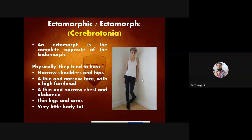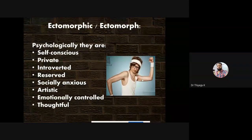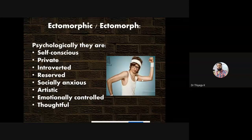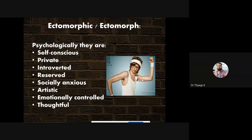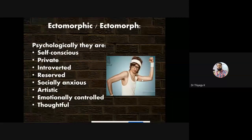Ectomorphic people are very self-conscious — they are always thinking about their own growth and not thinking about other people. They are not that open-minded to help others. They are very private — they won't share their personal issues or happiness with others. They are introverted and reserved. That is why endomorphic people are very social and enjoyable, but ectomorphic are totally opposite — they are very reserved and won't interact much with people.